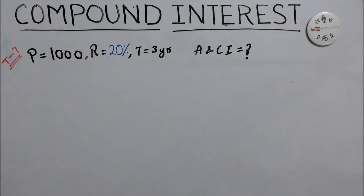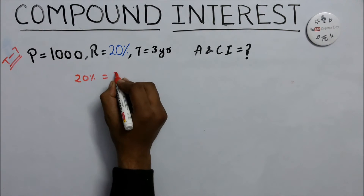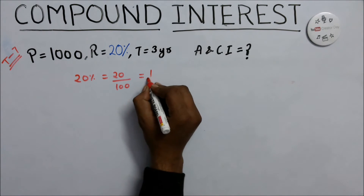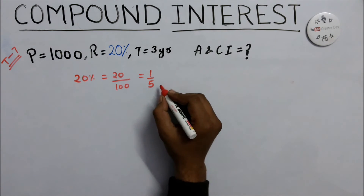This is trick number 7. The question is: P equals 1000, R equals 20%, time equals 3 years. We need to calculate amount and compound interest. In this method we change the rate of interest to a fraction: 20% equals 20/100 equals 1/5. Apply this method only when the fraction is in the form 1 divided by some number.